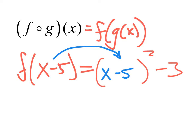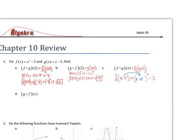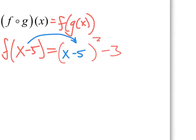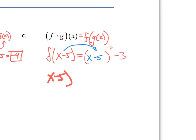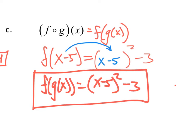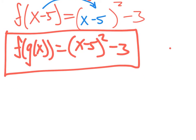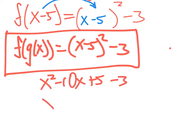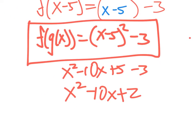Now it's just a matter of simplifying. We write it as blank squared minus 3, and what we're putting into the function is x minus 5. So the answer is x minus 5 squared minus 3. The instructions don't necessarily say to simplify, so that would be acceptable. But to simplify, we can square it out: x squared minus 10x plus 25, minus 3, giving us x squared minus 10x plus 22. That's probably the best answer for f of g of x.